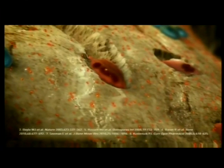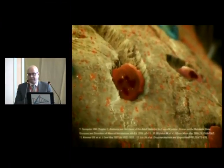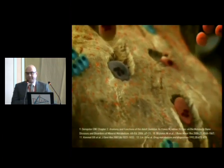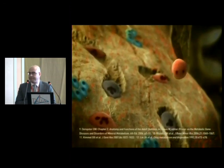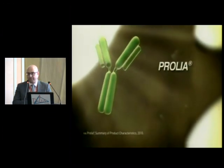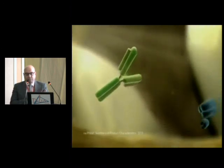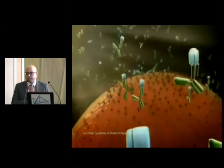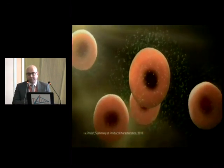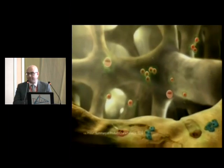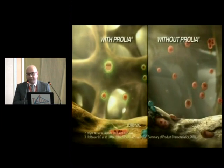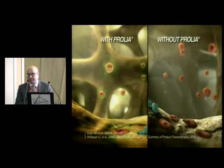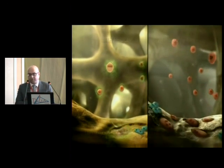We used bisphosphonates in the past to control high-turnover bone disease, but the problem is bisphosphonates stay in the bone for almost six years in patients with normal kidney function, and longer in patients with kidney disease. They kill the osteoblast and patients can end up with low or adynamic bone disease. Now we can use more specific targeted therapy — monoclonal antibodies like denosumab — that control bone resorption by controlling RANK-L. This monoclonal antibody against RANK-L gets attached to the ligand and prevents it from activating the osteoclast through its receptor, acting as a decoy.